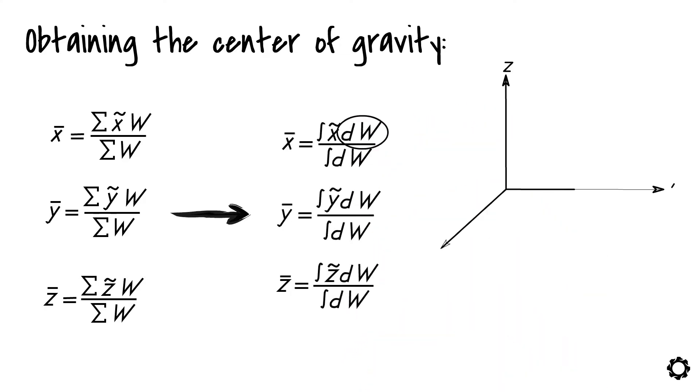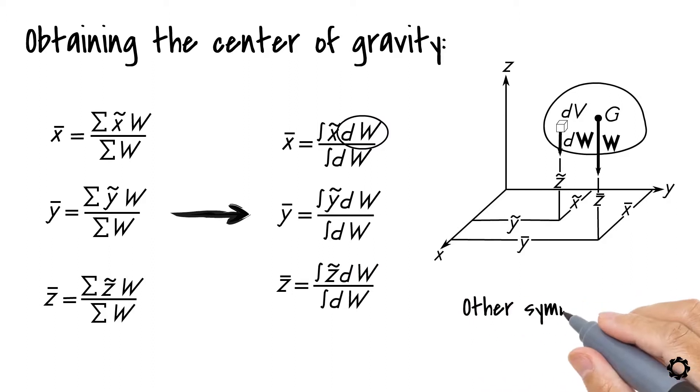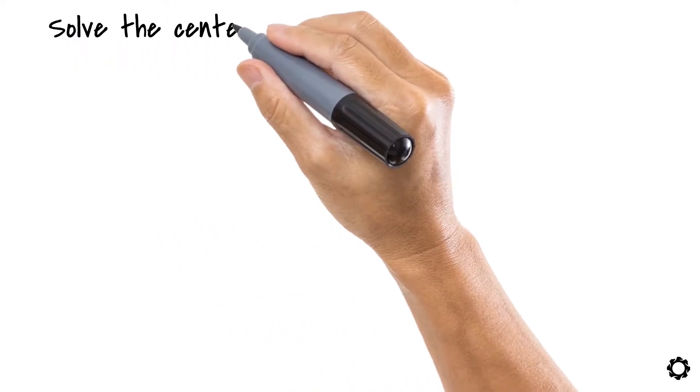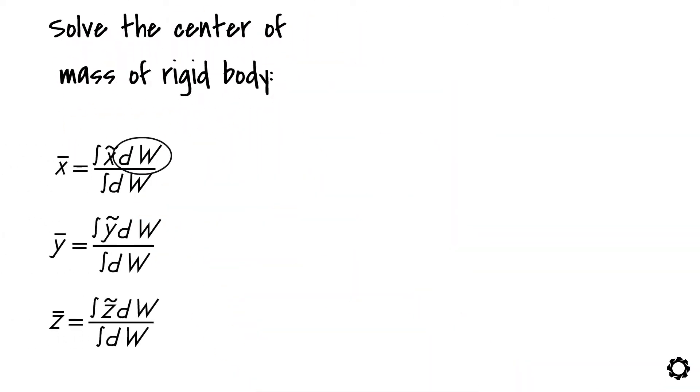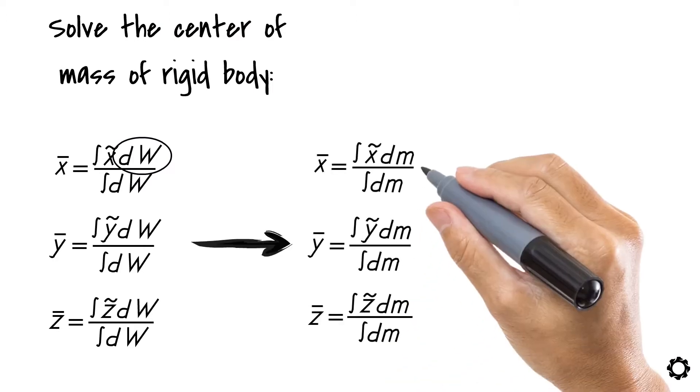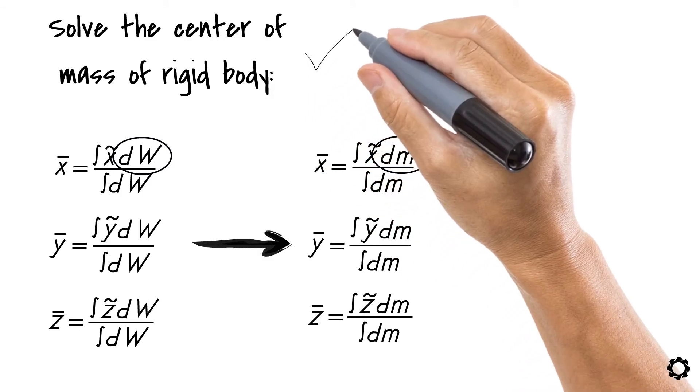Where dw is the differential weight of a body, other symbols are preserved the same as in the previous equations. If we would like to solve the center of mass of a rigid body, we can simply replace the differential weight term with a differential mass in the defined coordinate equations. By this replacement, we can determine the body's center of mass.